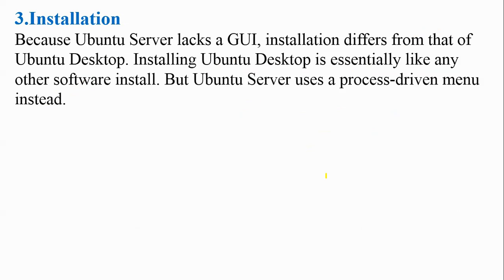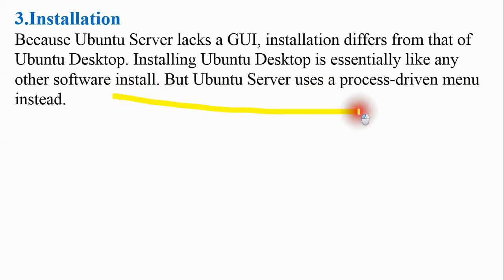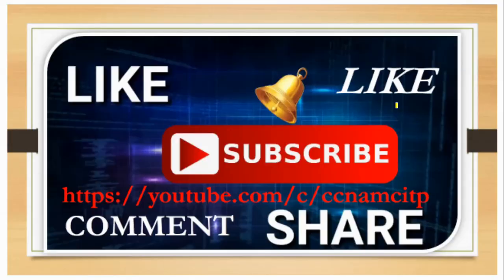The third difference is installation. Because of the lack of a GUI, installation differs between desktop and server. Installing Ubuntu Desktop is essentially like installing any other operating system, but Ubuntu Server uses a process-driven menu instead. We will go through all installations step by step in my next video, so you will have a clearer picture of how to install both desktop and server.